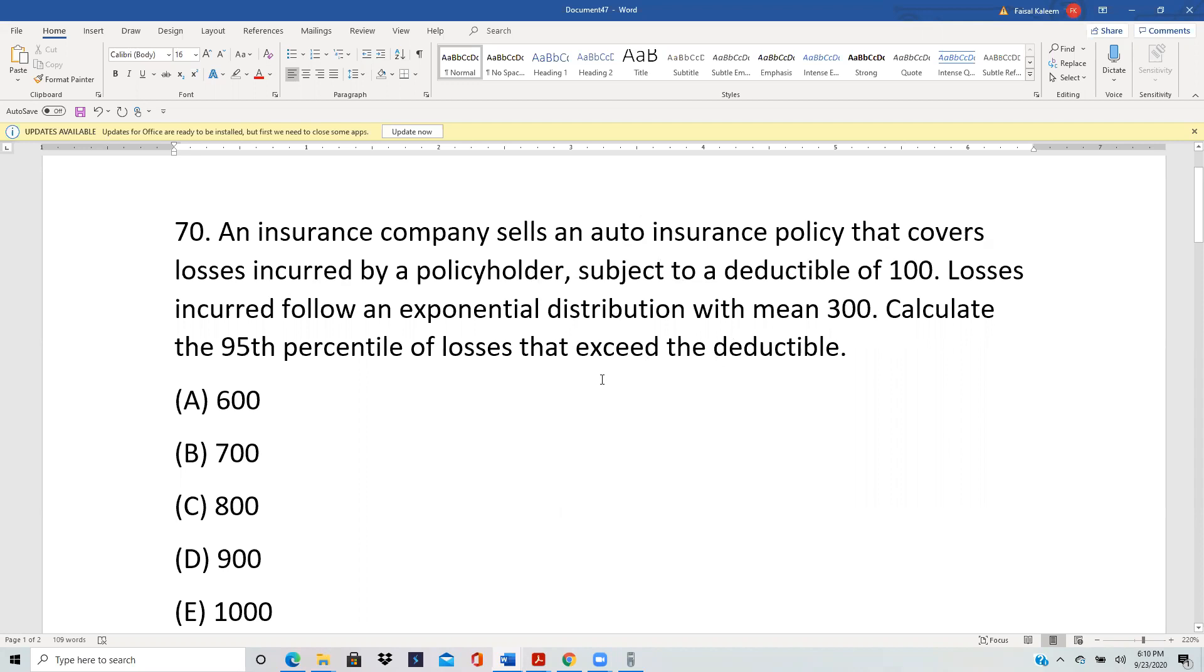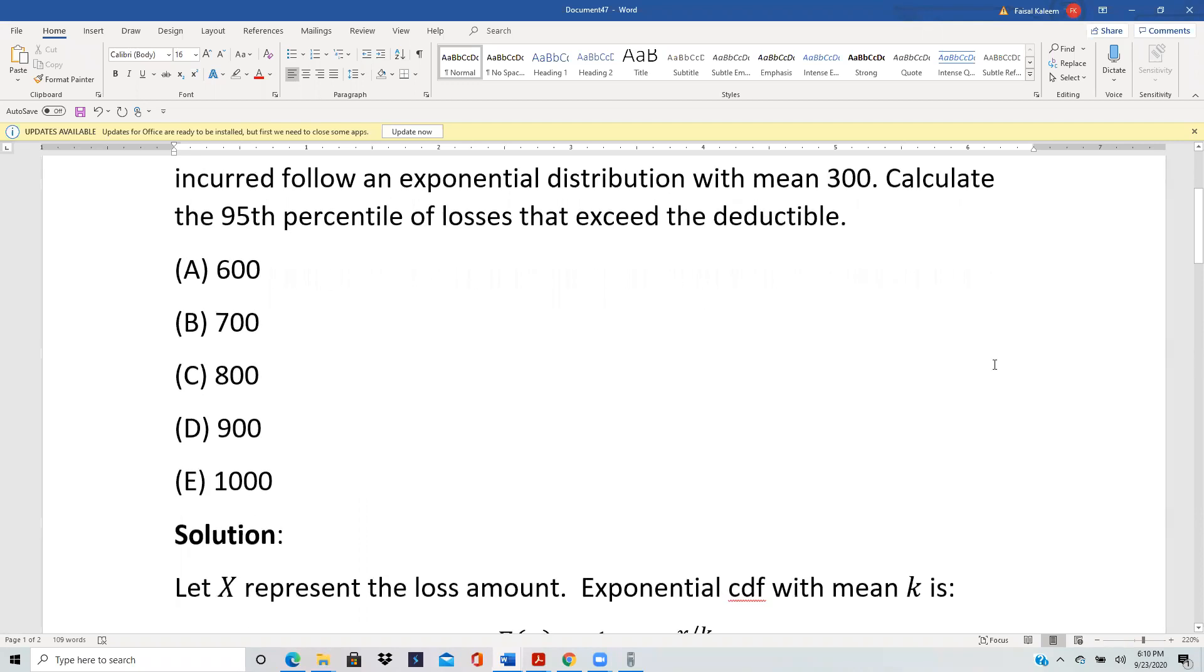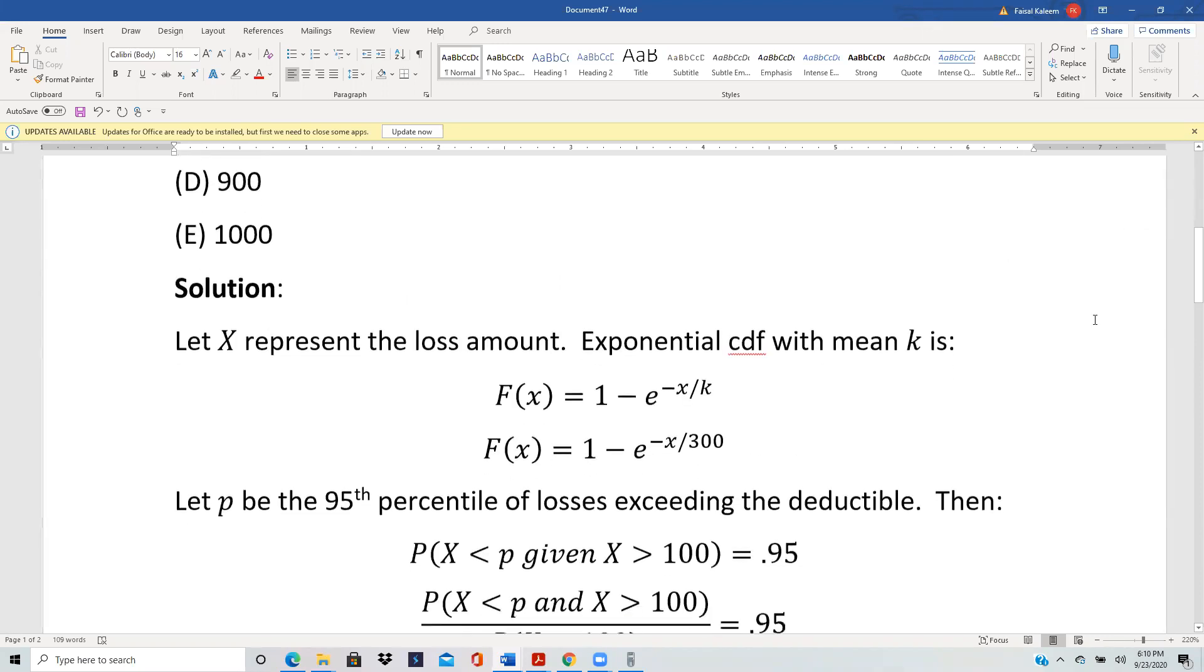So once again, the CDF will be useful. And we know that the CDF for exponential with mean K is 1 minus e^(-X/K). Here the mean is 300, so it'd be 1 minus e^(-X/300).